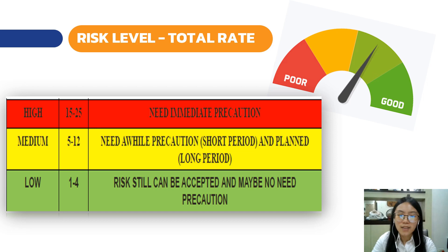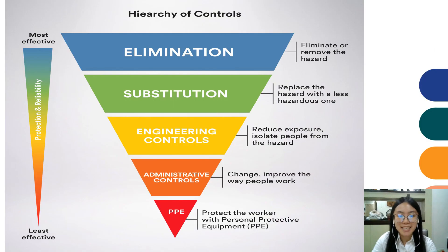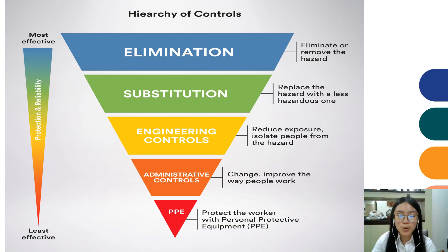What is the available Risk Control that can be taken? By following the control hierarchy, the more effective way is elimination while the least is wearing PPE, personal protective equipment.